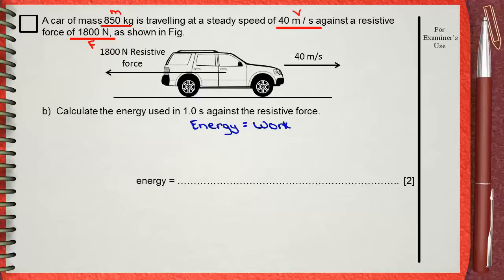Work itself equals force times distance. In this question, he wants you to calculate the energy used in one second against resistive force. In other words, the work against resistive force. Work is force times distance.